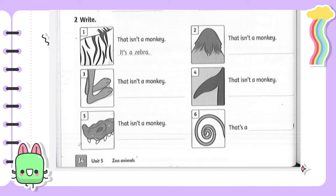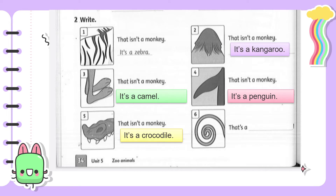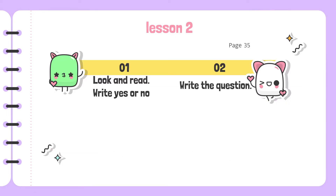Picture two — it's a kangaroo. Picture three — it's a camel. Picture four — it's a penguin. Picture five — it's a crocodile. And the last picture, number six — that's a monkey. Now continue to lesson two. Open your book, page 35. There are two exercises.